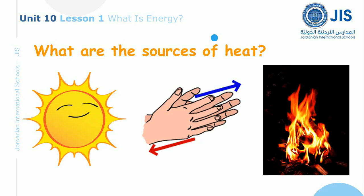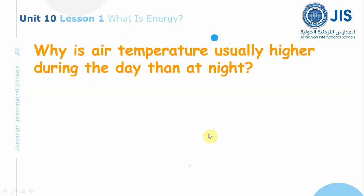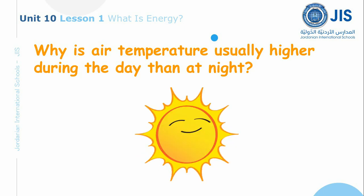So there are three sources of heat: sun, rubbing things together, and burning fuel. Why is air temperature usually higher during the day than at night? Because heat from the sun warms the air by day, and the air cools after the sun sets.